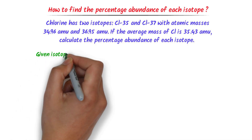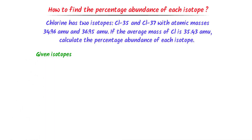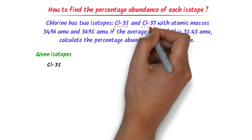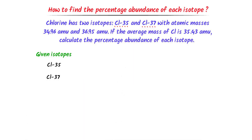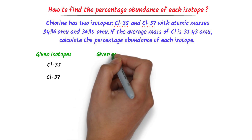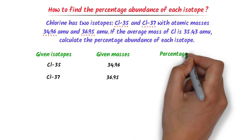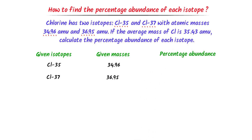Firstly, I write the given isotopes. We can see that one is the Chlorine-35 isotope and the second one is the Chlorine-37 isotope. Secondly, I write the given masses of each isotope: the mass of Chlorine-35 is 34.96 amu and the mass of Chlorine-37 is 36.95 amu. We are asked to find the percentage abundance of each isotope.